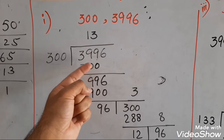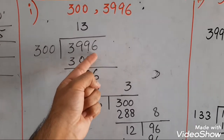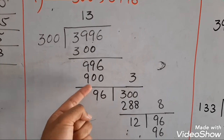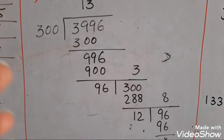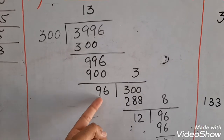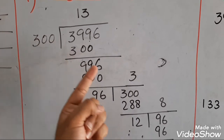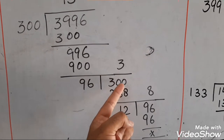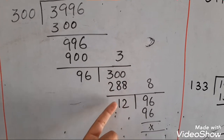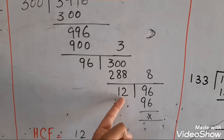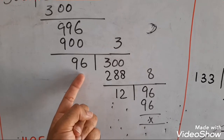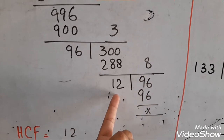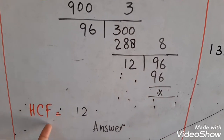300 ones are 300. 9 minus 0 is 9; 9 minus 0 is 9 and 6. 300 multiplied by 3 is 900. 6 minus 0 is 6; 9 minus 0 is 9; 9 minus 9 is 0. The remainder is 96. Then 96 goes in: 96 times 1 is 96 — remainder is 12. 10 minus 8 is 2; 9 minus 8 is 1; 2 minus 2 is 0. The number in the remainder is 12. Now 12 is small and 96 is big — 12 divides 96 completely. So the HCF is 12.